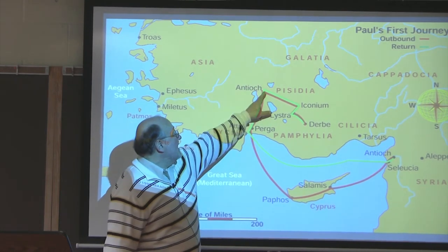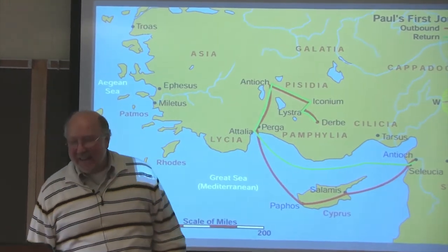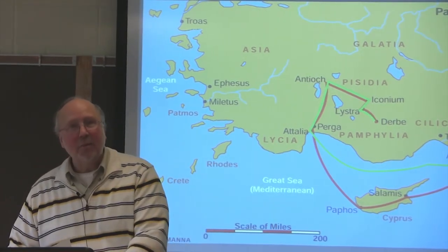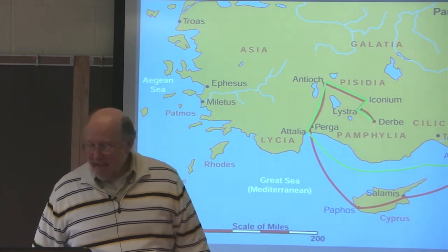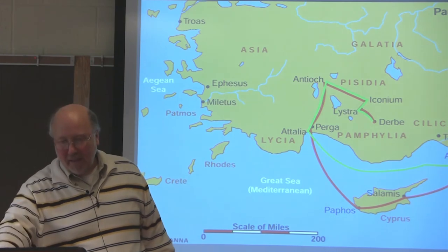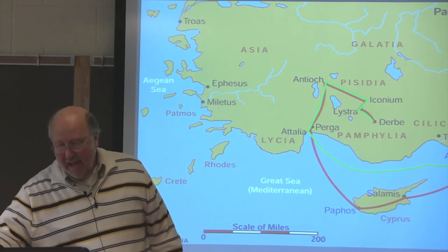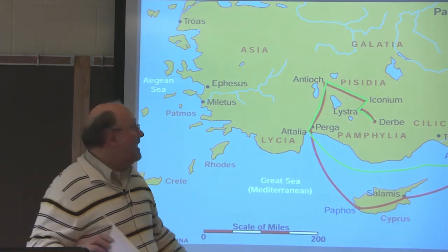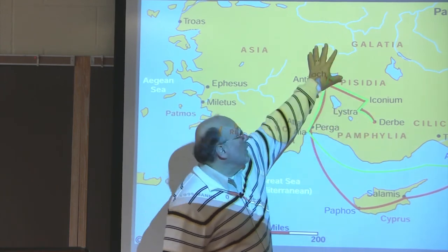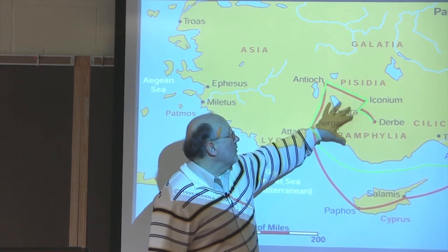Paul heads up to Antioch — and yes, another Antioch. This is Pisidian Antioch. Why so many Antiochs? Back from the Alexander days, there was a guy named Antioch, and people went around naming places after him. In Acts chapter 13, they arrive at Antioch in Pisidia. This area is what I'm going to call southern Galatia — there's a northern and southern Galatia, but we'll call this southern Galatia.